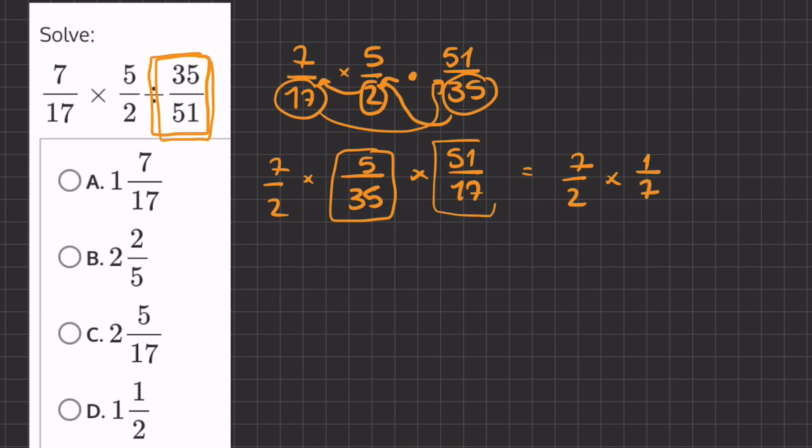And if we simplify this 51 over 17, we will get 3, because 17 goes into 51 three times. Alright, so now we can multiply our fractions straight across.